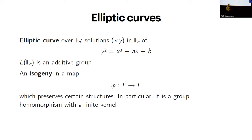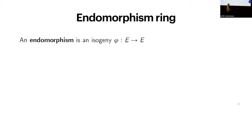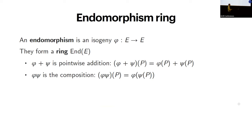Endomorphisms are isogenies from a curve to itself — same domain and co-domain. If you fix a curve and look at all its endomorphisms together, they form the endomorphism ring: a ring in the algebraic sense with addition (defined pointwise) and multiplication (by composition). The endomorphism ring is generally not commutative since composition of maps is not typically commutative.